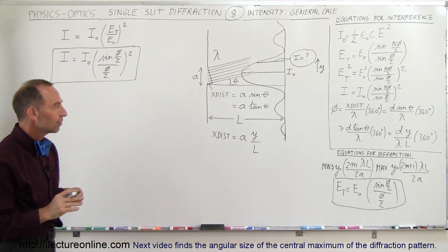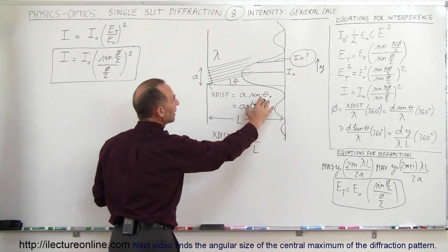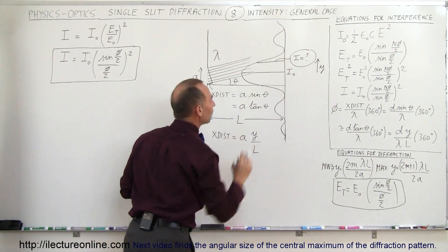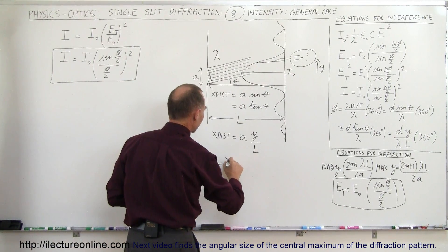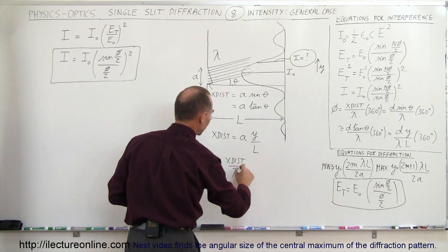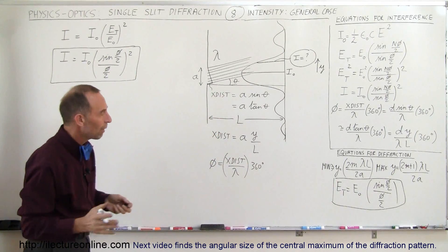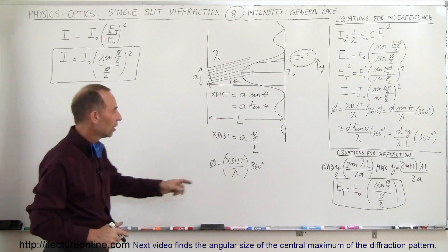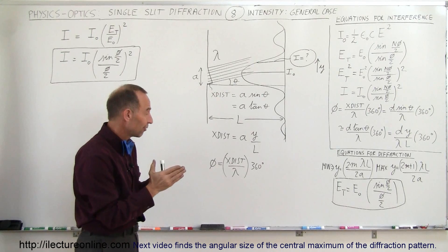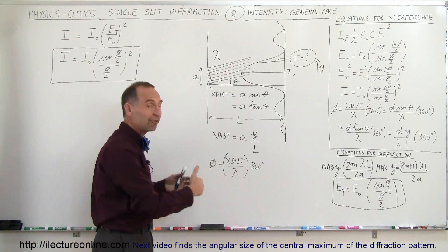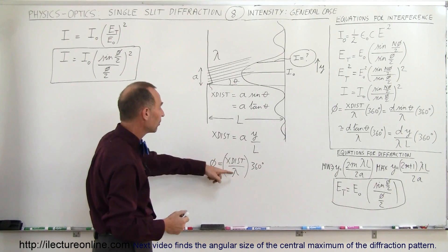There is a relationship between the extra distance traveled, the look-up angle, the distance to the point of interest, and the phase angle phi. The phase angle can be written as the extra distance traveled divided by the wavelength, that ratio times 360 degrees or 2 pi radians. This is simply a ratio of how much extra distance is traveled divided by the wavelength — a fraction of a wavelength if less, or more than one times the wavelength if greater.